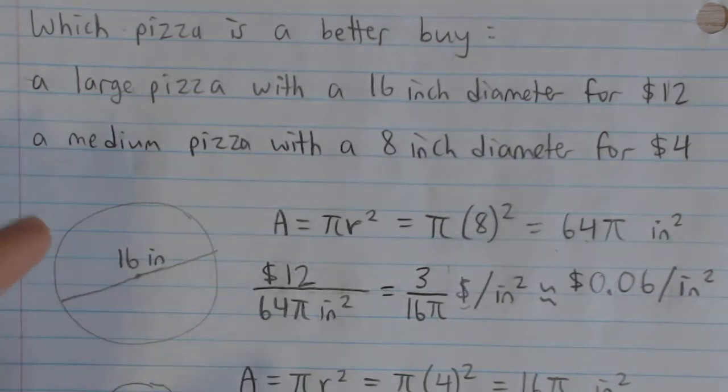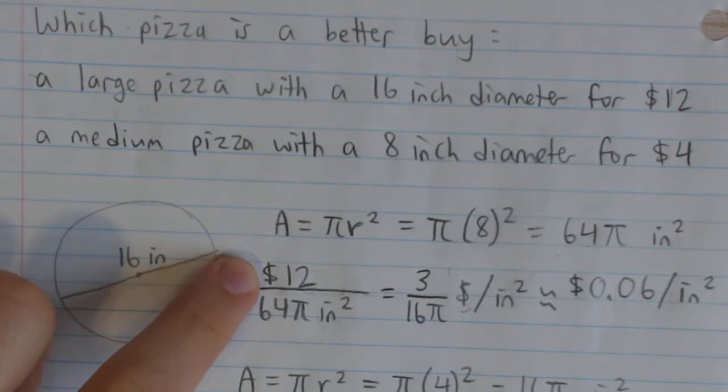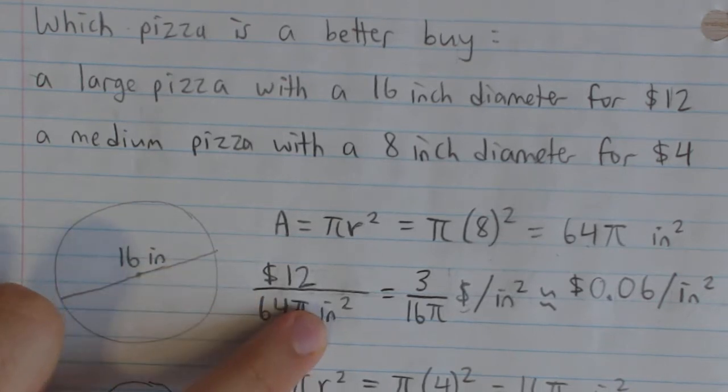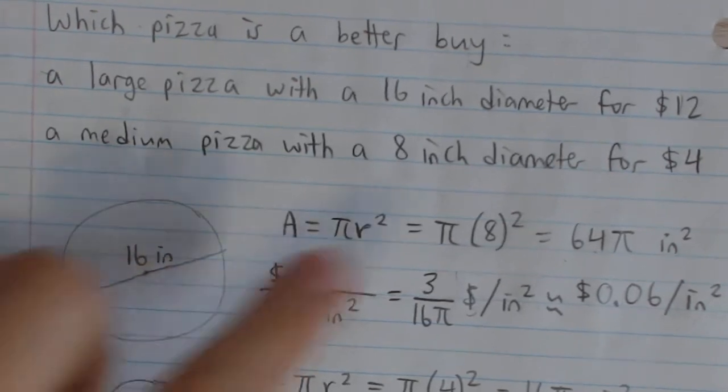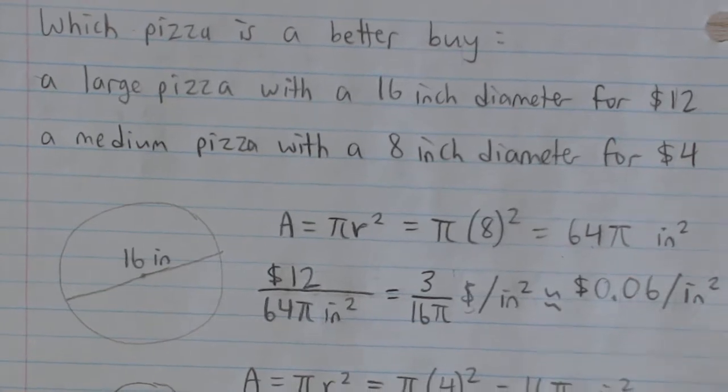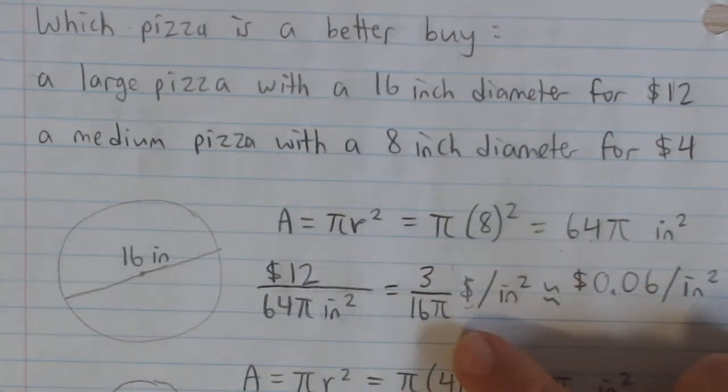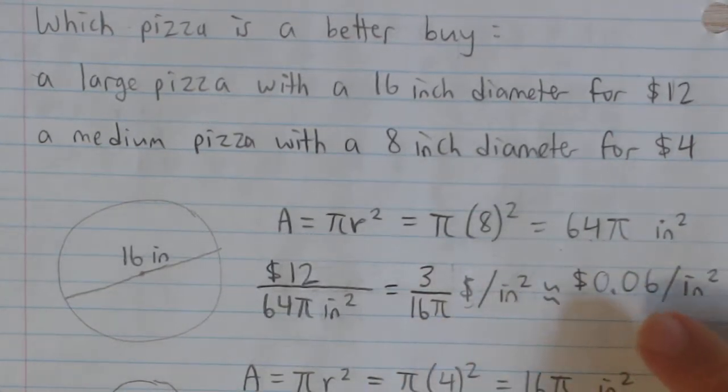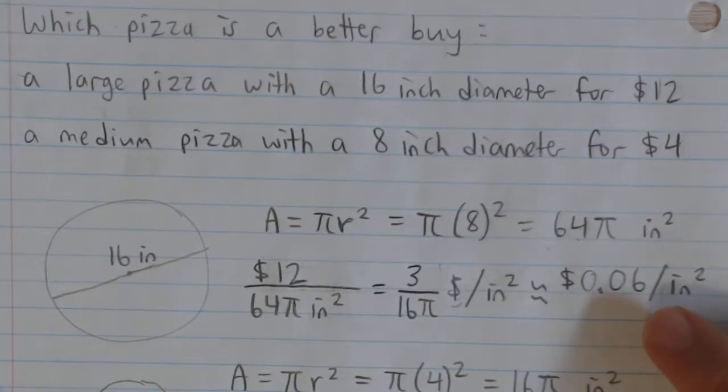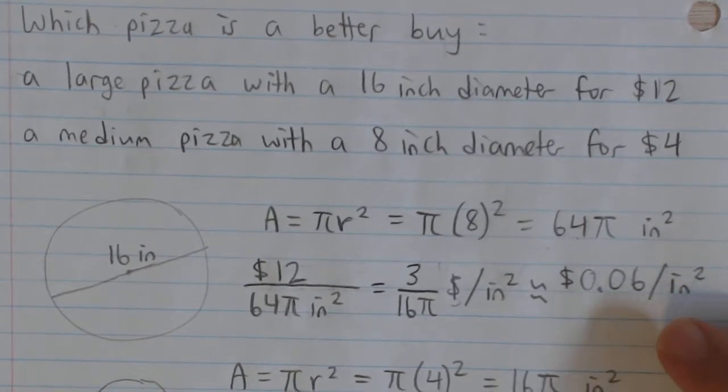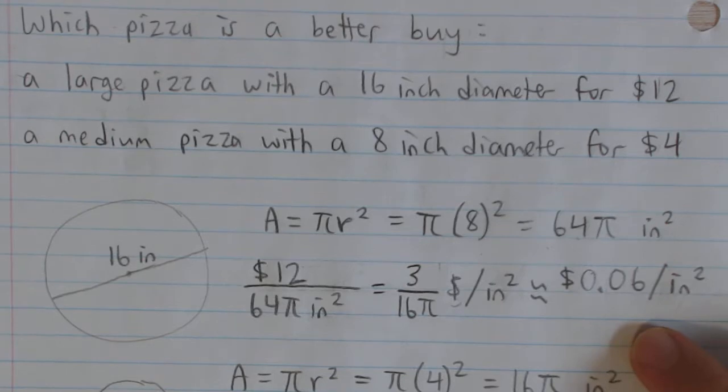To calculate the price in dollars per square inch, I'm going to divide the price, $12, by the square inches. That gives me an exact form of 3 over 16π, or approximately 6 cents per square inch. That's for the large pizza.